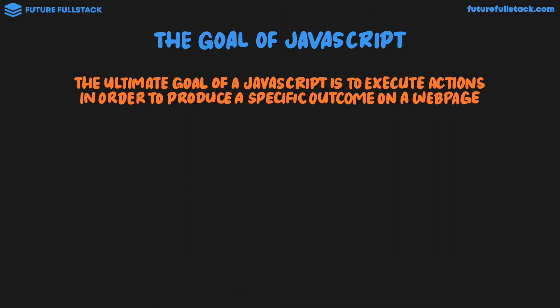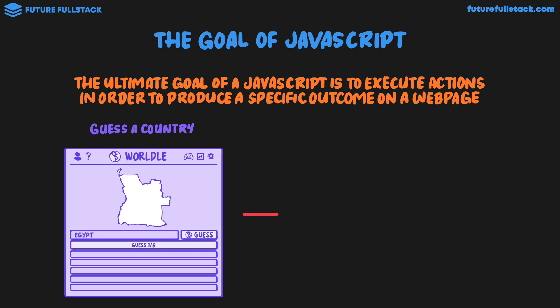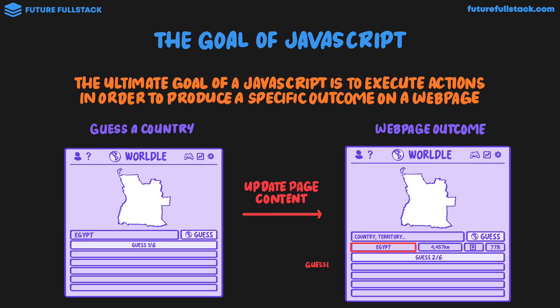So on the Wordle game, I guess a country like Egypt. This results in an update to the page content where we get our webpage outcome — that is, the guessed country, the distance to the correct country, the direction to the correct country, and the percentage correct. In a nutshell, JavaScript is executing actions by the user and produces an outcome on the webpage.